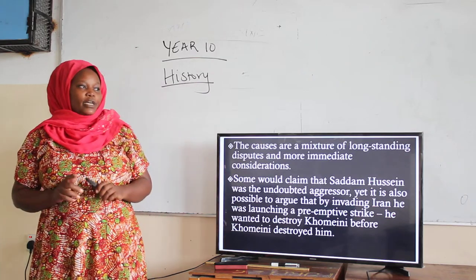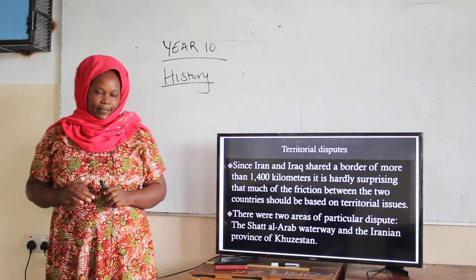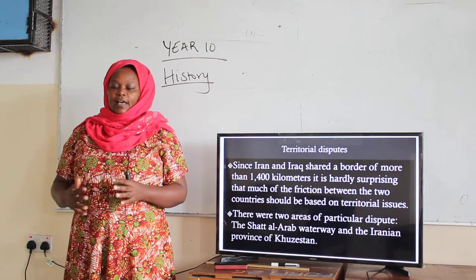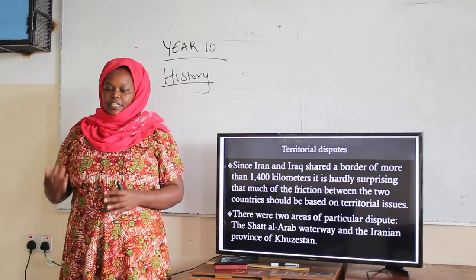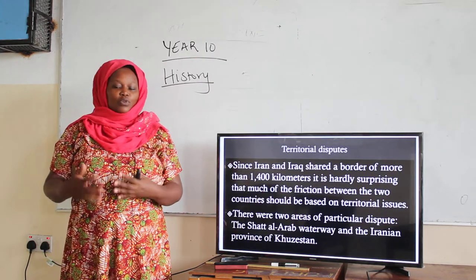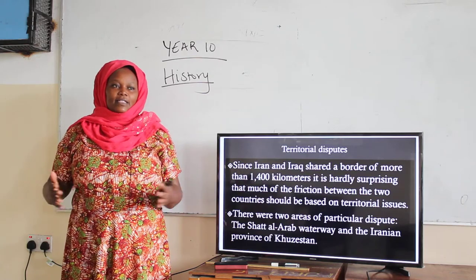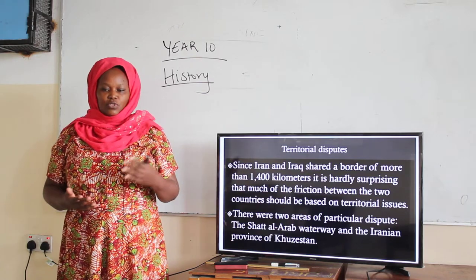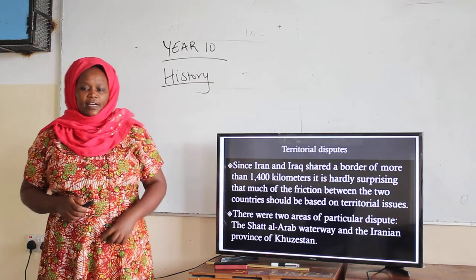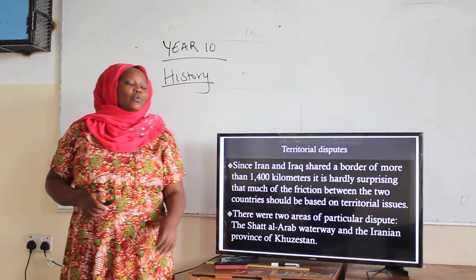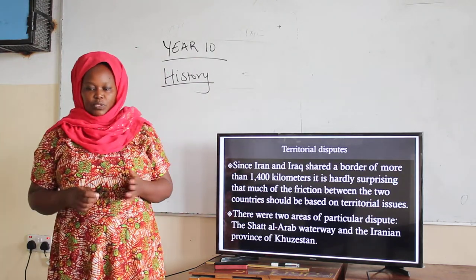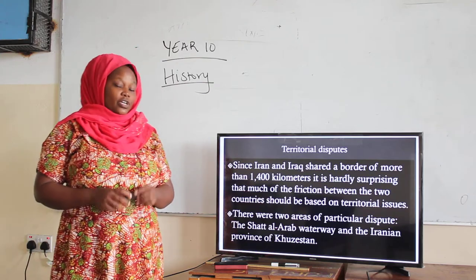We are going to start with the territorial dispute between Iraq and Iran. Iraq is a country between two rivers — the Tigris and the Euphrates. This emerges as one of the problems whereby they are arguing because of their waters. There are some areas shared by the Arabs and the Persians, because Iran was the Persians and Iraq were the Arabs. Since Iraq and Iran share a border of more than 1,400 kilometers, it's hardly surprising that much of the friction between the two should be based on territorial issues.